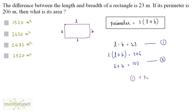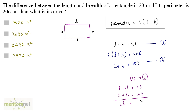Adding equation 1 and equation 2: L minus B plus L plus B equals 23 plus 103. The B terms cancel, leaving twice L equals 126. Therefore, length equals 126 by 2, which is 63 meters.